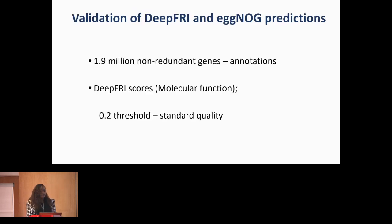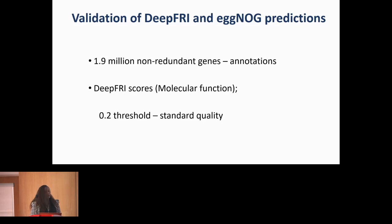The first step of the functional analysis is validation. We have one method based on deep learning and another based on EggNOG. For this validation step, I only considered the molecular function branch of Gene Ontology, which can also produce biological process and cellular component annotations. We used the molecular function branch with a DeepFRY threshold of 0.2. We quantified Gene Ontology terms based on Shannon information content, which measures how specific a GO term is, expressed as negative log-2 probability of a GO term — the probability of observing that ontology term in the UniProt database.